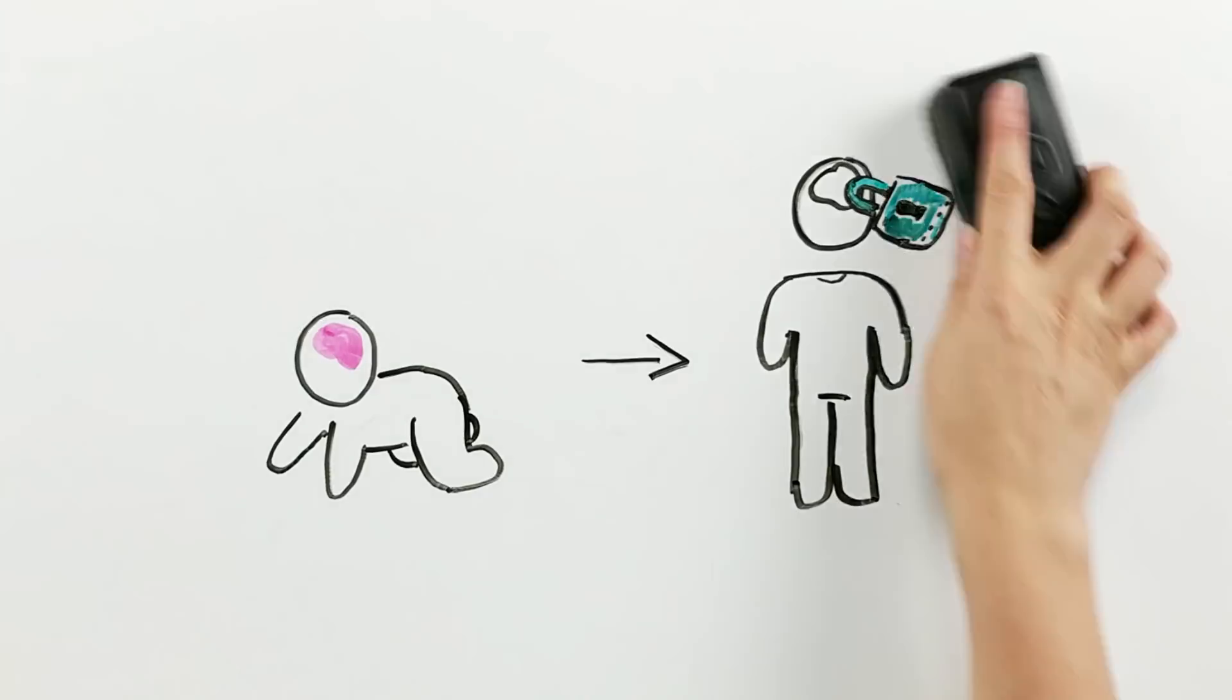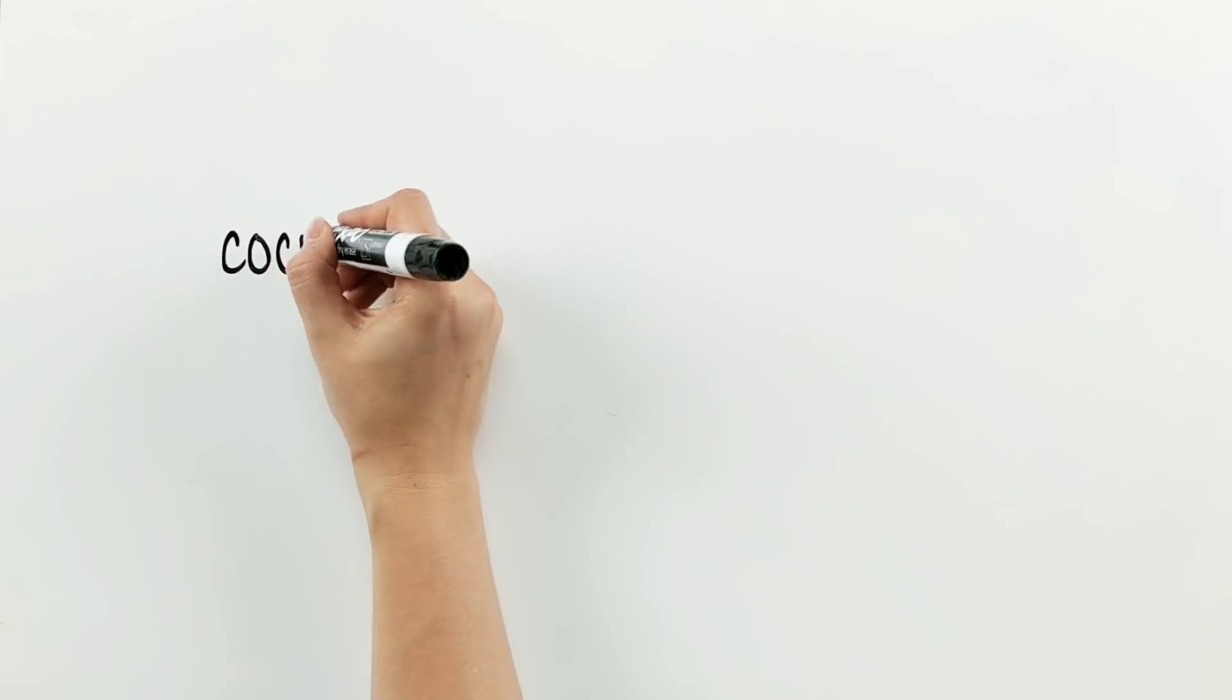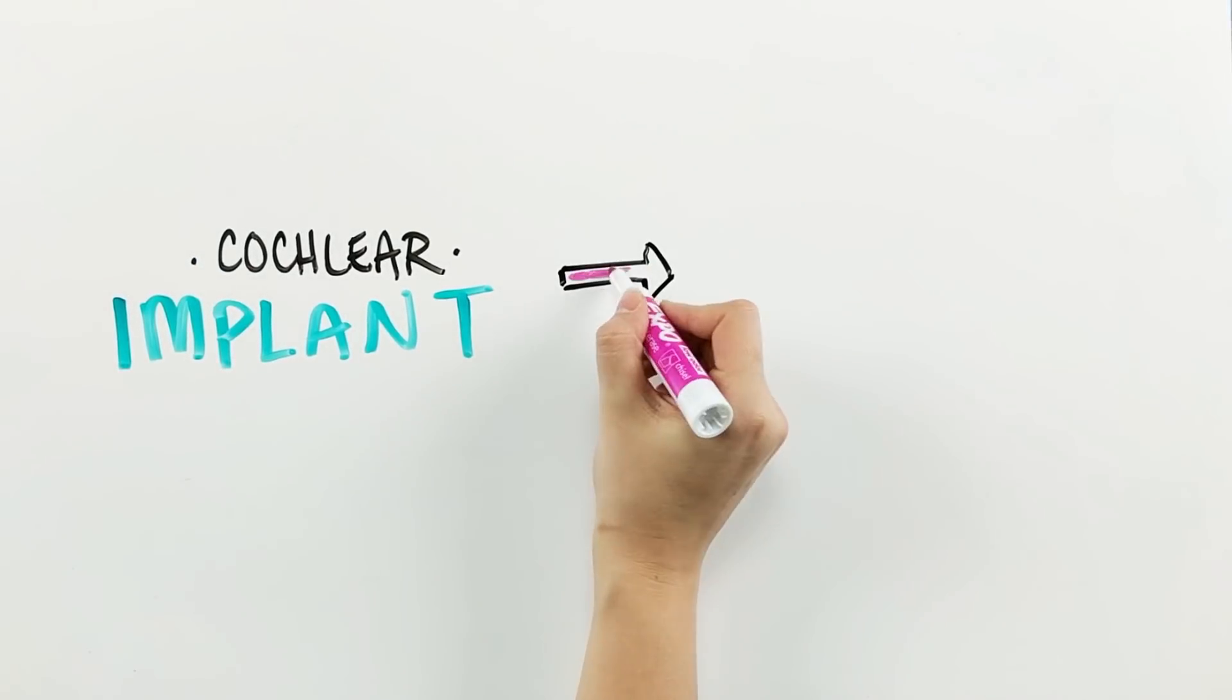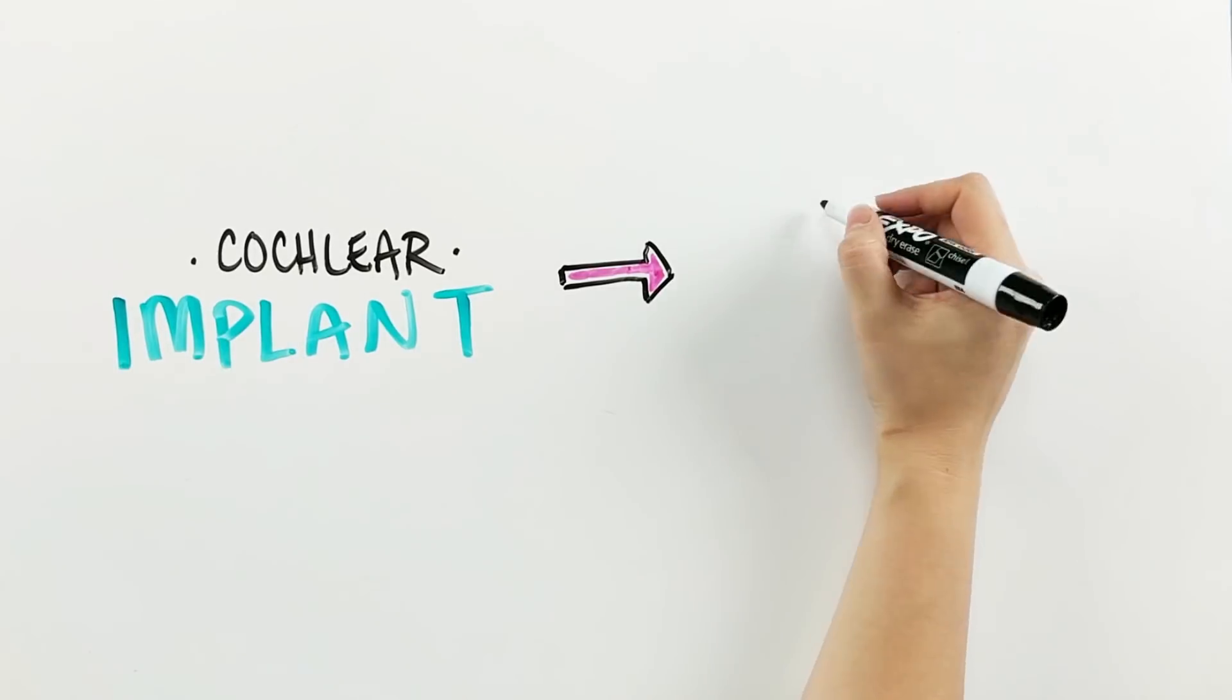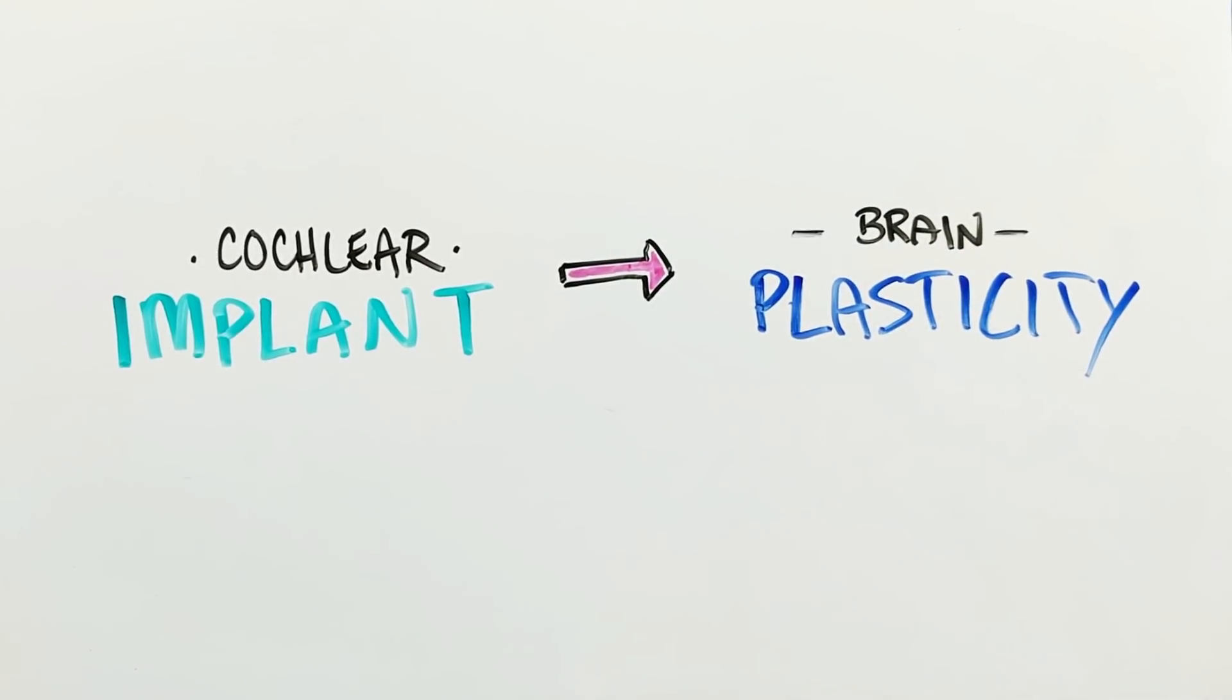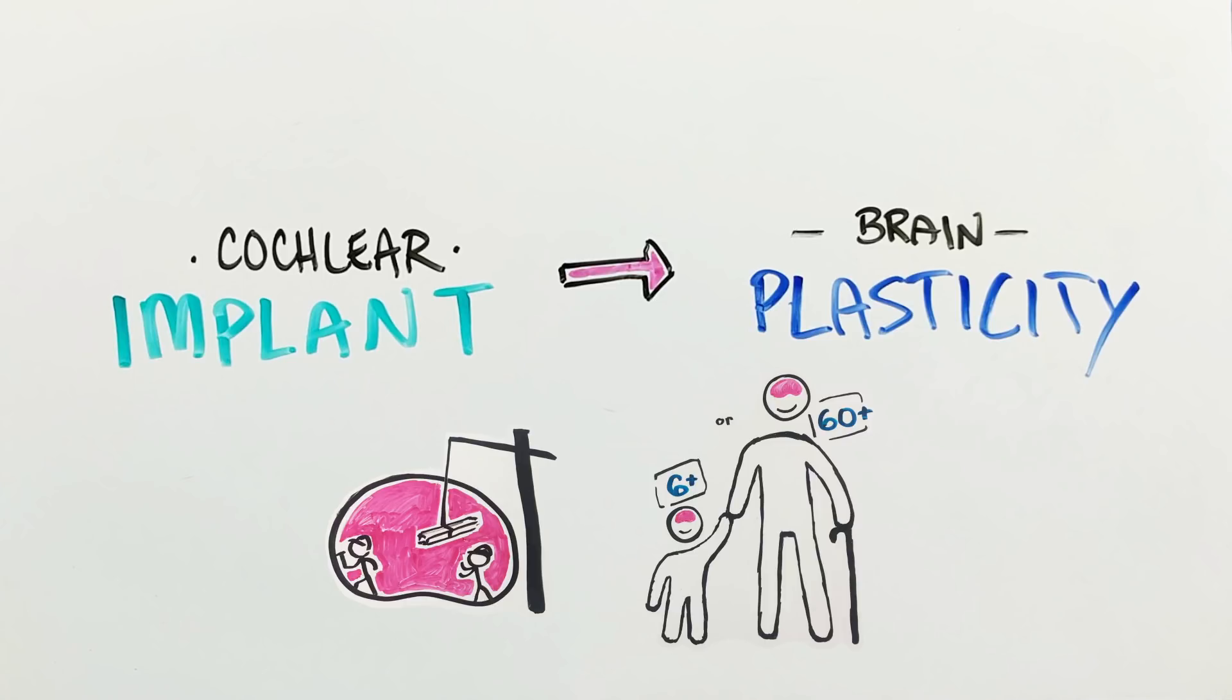But the cochlear implant provided us with a clear example that helped us change that thinking because it showed us that the brain actually had the power of brain plasticity, that it had a remarkable ability to remodel itself to work in a very different way to accomplish amazing things at any age.